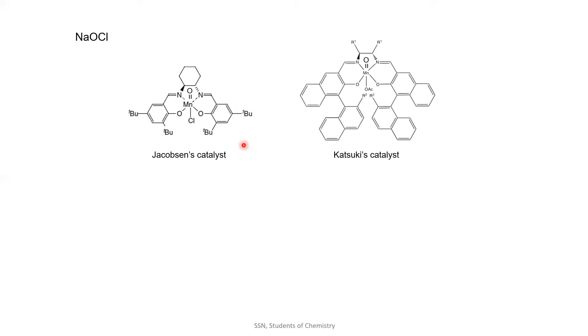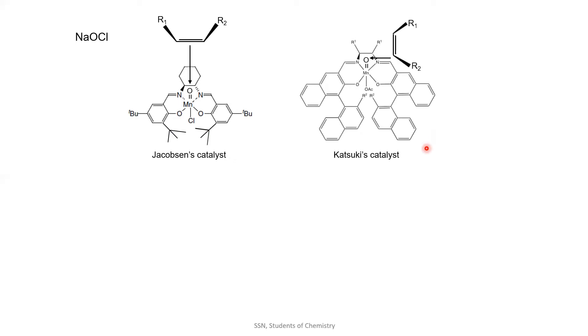In the case of Jacobson's catalyst, the tertiary butyl groups are hindering the downward position, so the alkene will come from the top. In the case of Katsuki's catalyst, it is found that the alkene will come from sideways.